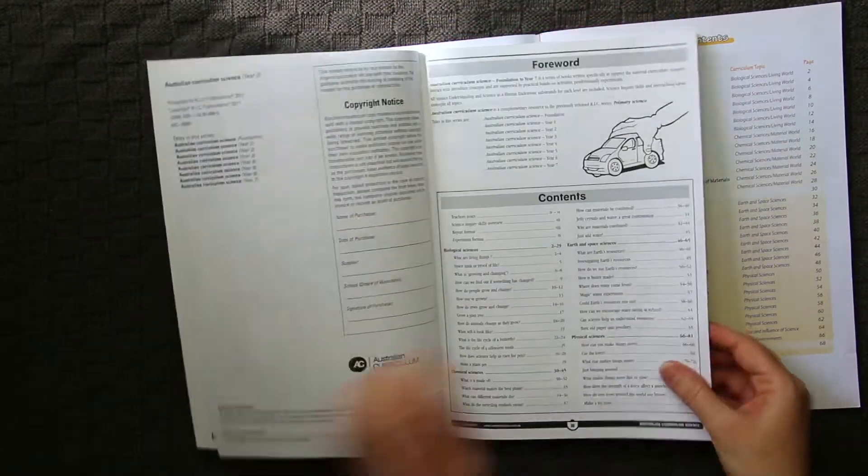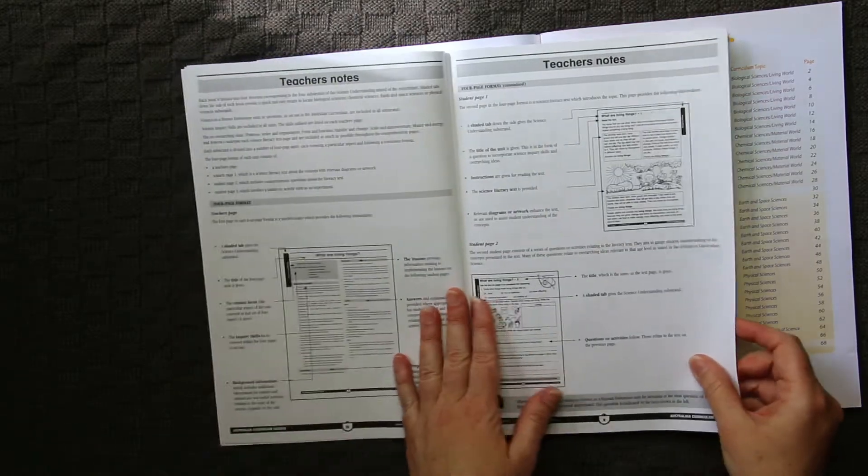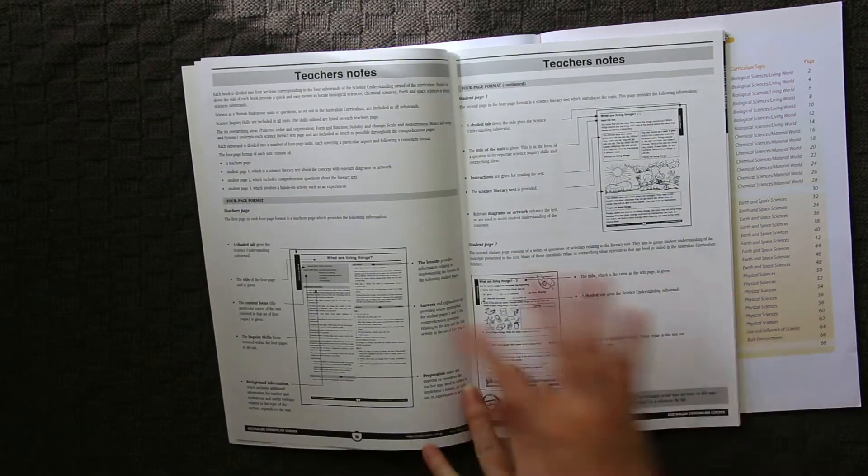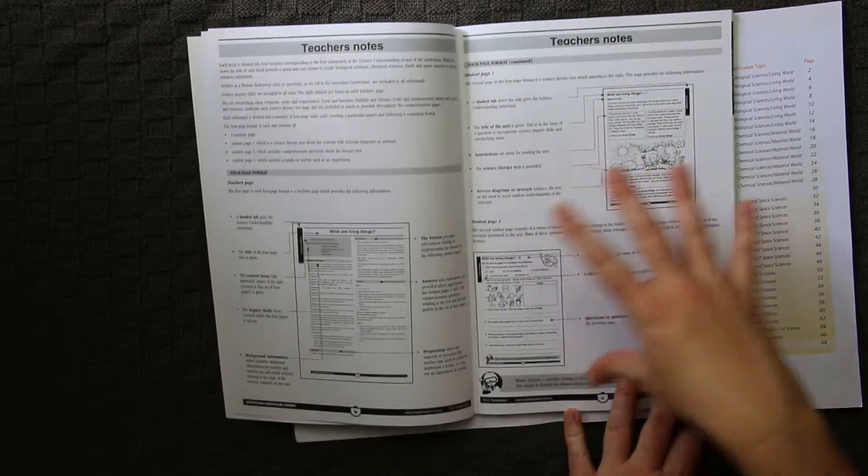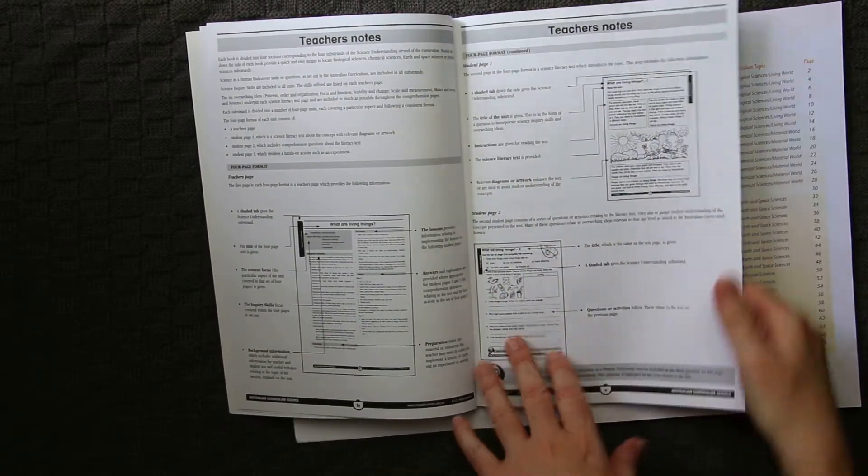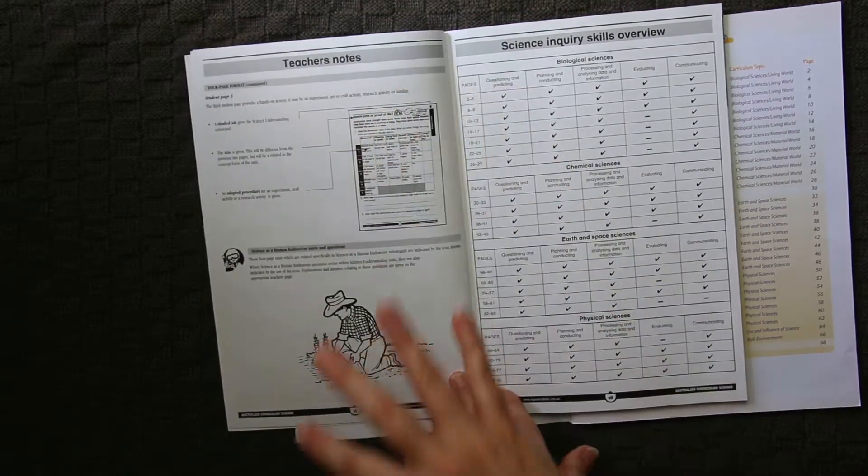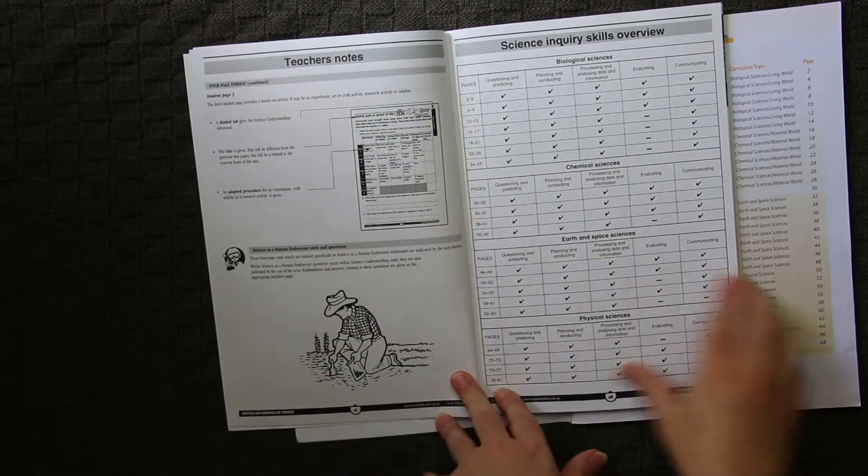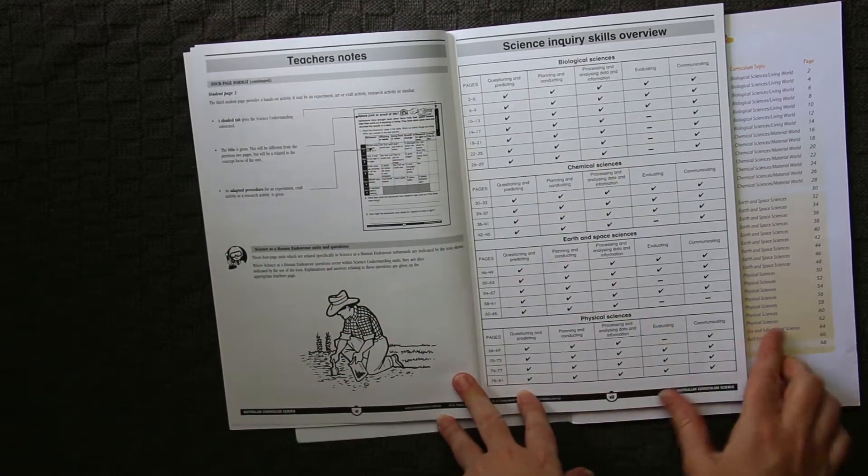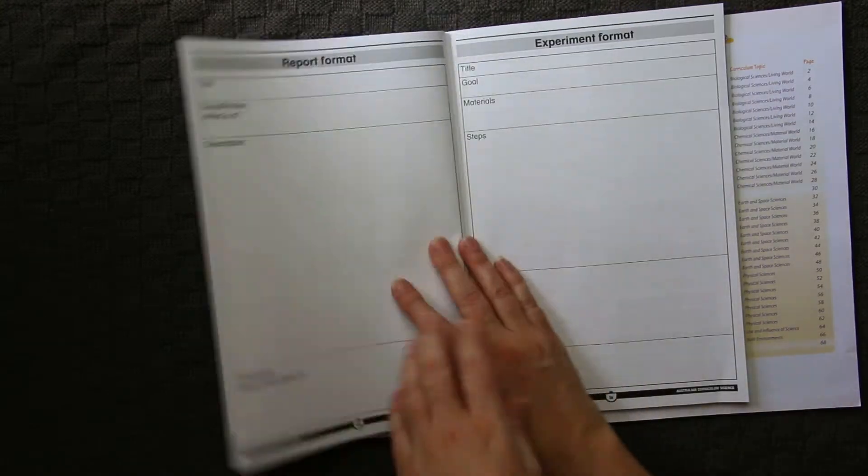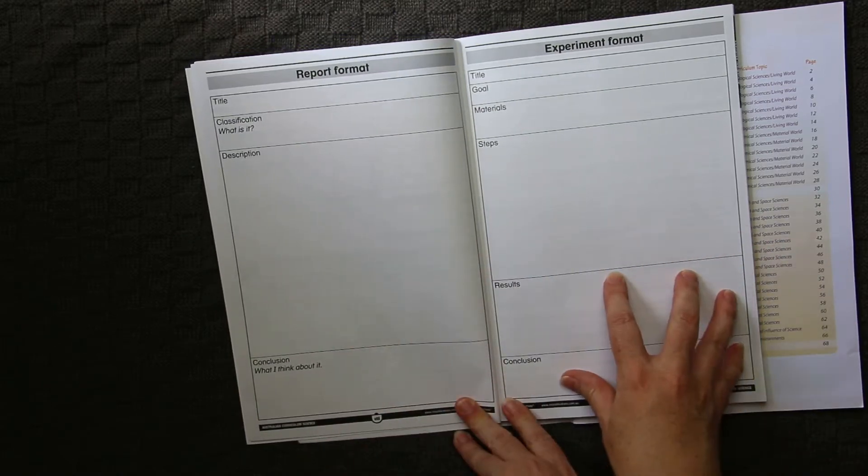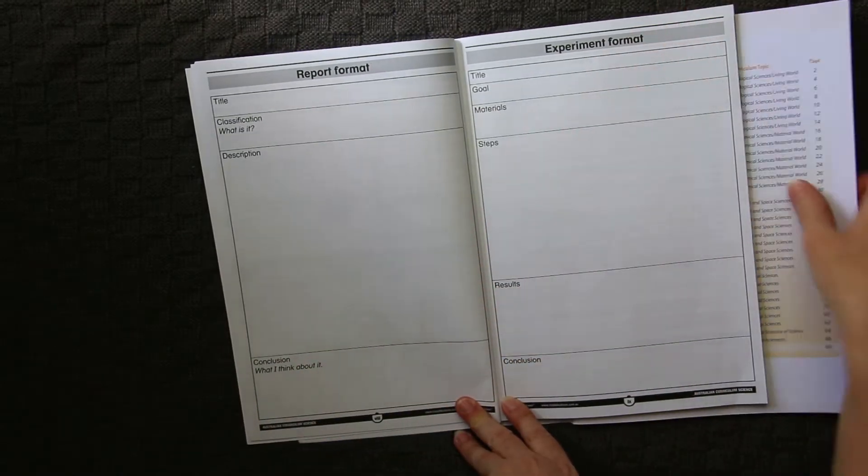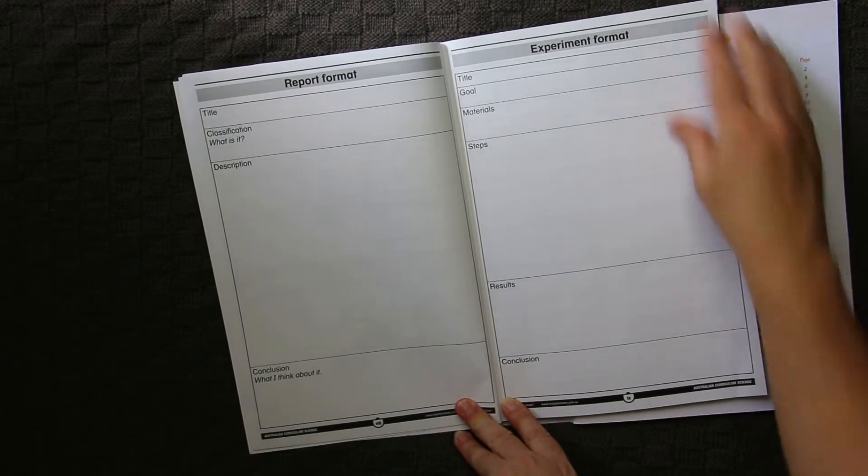The other thing that I wanted to point out in this particular one is it has some extensive teacher's notes. It explains what each page is getting at, what the relevant activities are, and what you can watch will be actually covered. It covers all of the different skills overview for you. It has a photocopiable report format and experiment format if those things are important to you. This book does not have those.